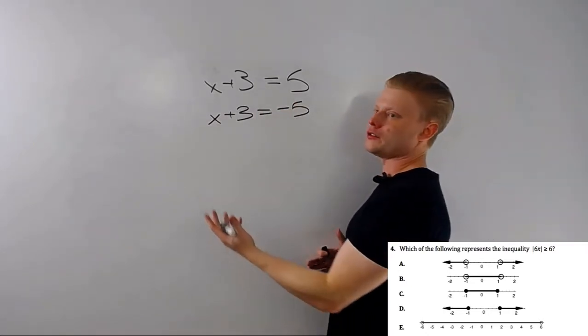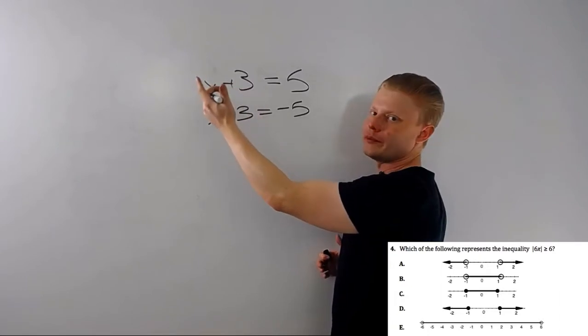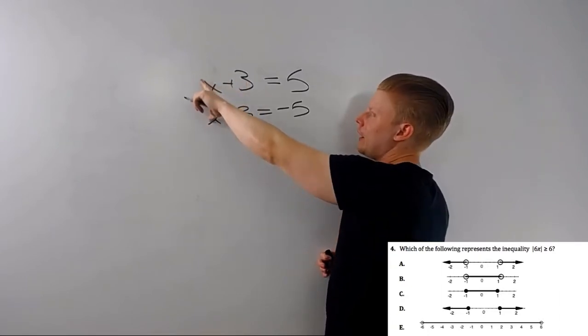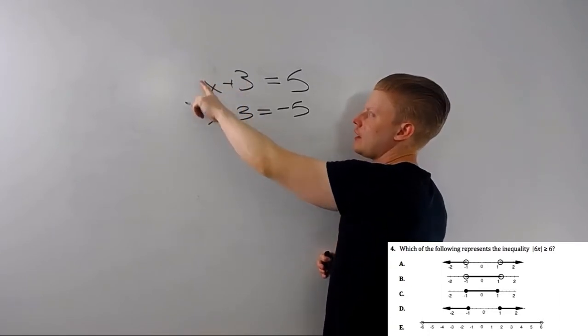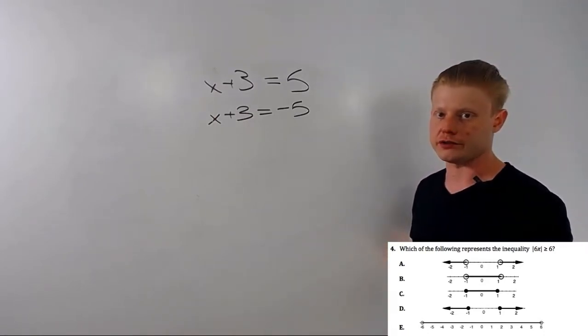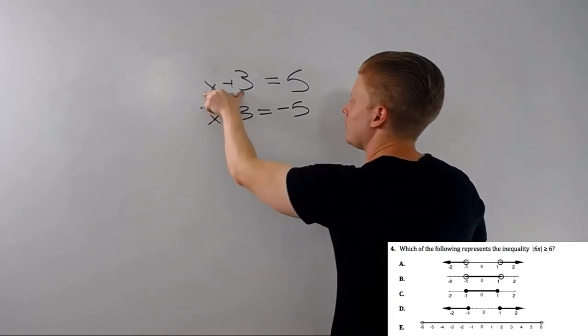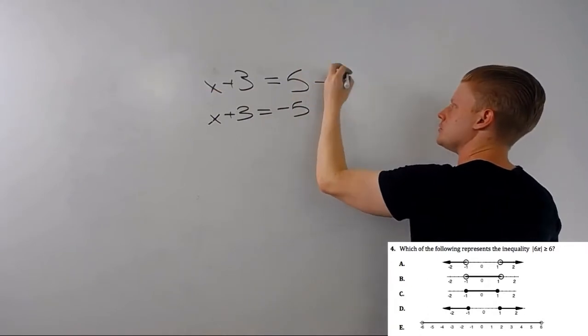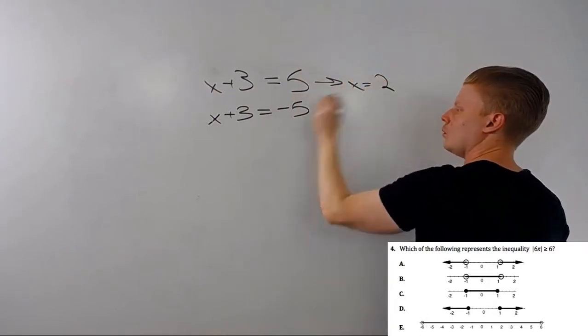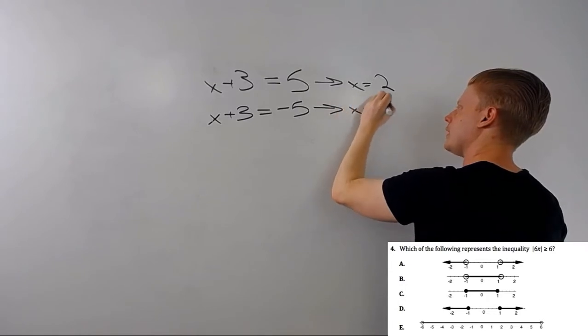So what I've done here, I call it splitting my equation, but it's just something I made up. I split this into two equations. I'm going to have two answers on absolute value equations, at least. So to rearrange and solve, I'll get x equals 2, or subtracting 3, x equals negative 8.